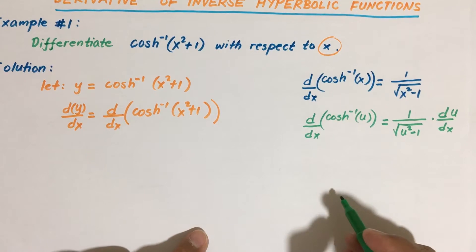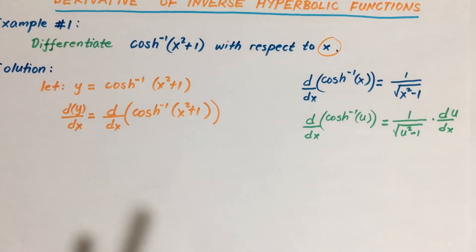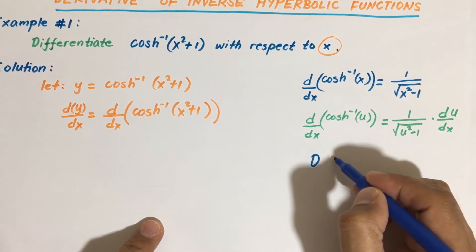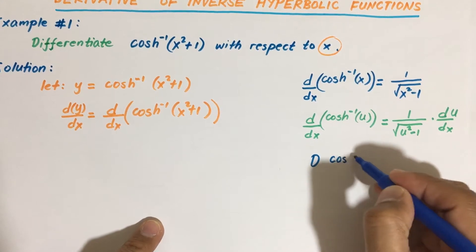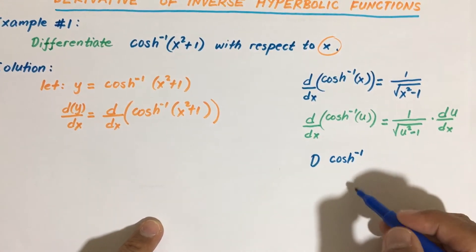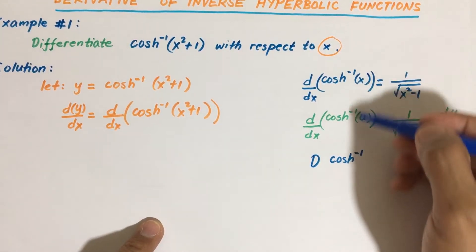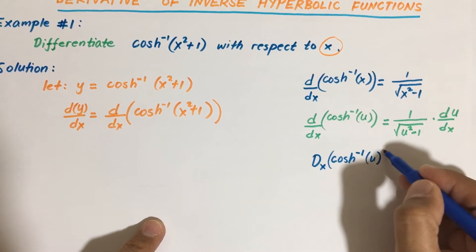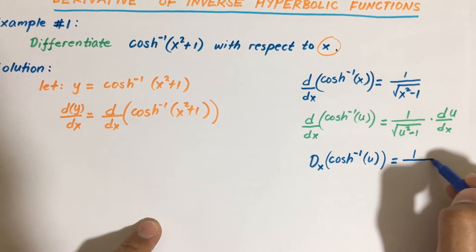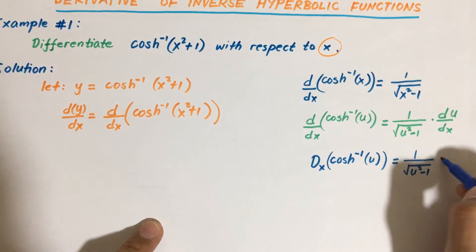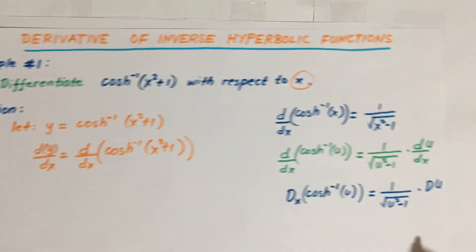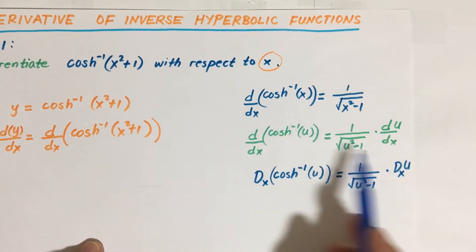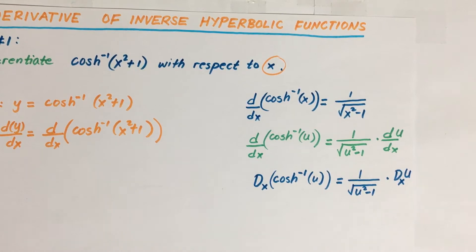Another notation you might see in other sources: the derivative can be written using a negative one superscript to indicate inverse, and H to indicate hyperbolic. So the derivative of cosh⁻¹(u) with respect to x is also equal to 1 over the square root of u squared minus 1, times the derivative of u with respect to x. These different notations all refer to the same formula.